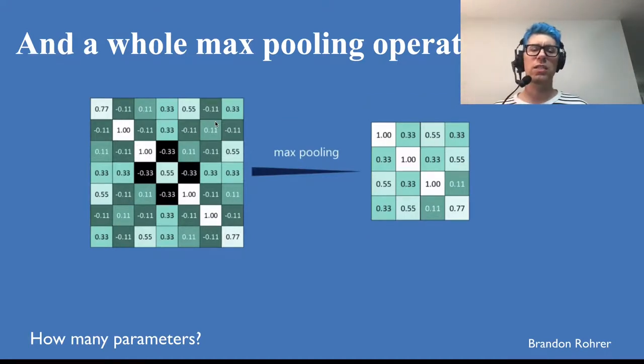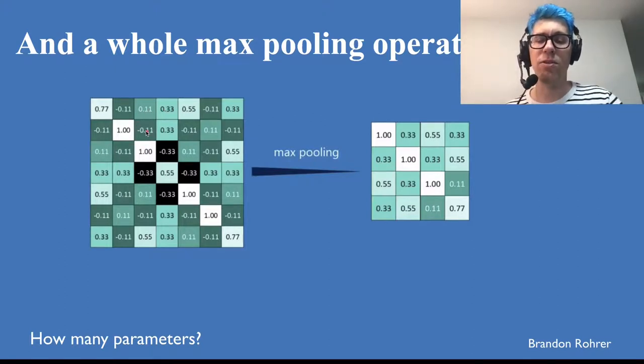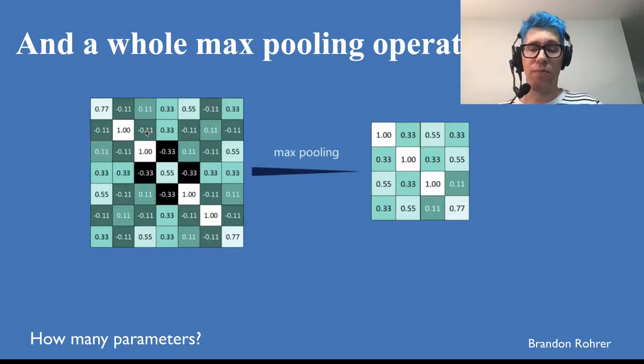Now how many parameters did we just use? How many extra parameters do we need for that? Well, zero, because all we did is we took the max within that area. That's not a free parameter. So this has 0 free parameters, which is very nice because it gives us a feature that we are looking for, namely something like rough translation invariance, and it doesn't cost us any more parameters. Now it does cost us something because we now have 4x4 instead of 9x9 parameters. So now this has gotten smaller. Now in the end that's what we want.